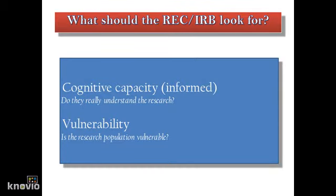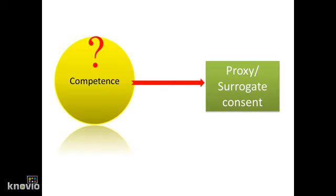So what should research ethics committees or institutional review boards look for when they review research protocols? They should be concerned about the cognitive capacity of individuals who will be targeted to enroll in the research, and also the potential vulnerability of the research population. Vulnerability is defined as individuals who cannot adequately protect their own interests. If individuals are believed not to be competent to make a decision, then there needs to be proxy or surrogate consent.